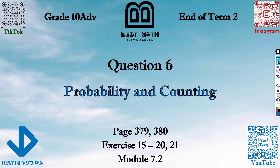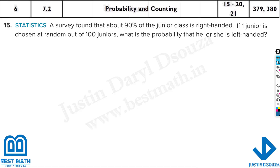Question six is about probability and counting, from module 7.2. These are all real world problems and they're pretty easy because you don't need to solve in detail — just get to the part of what is required and you can easily solve them.